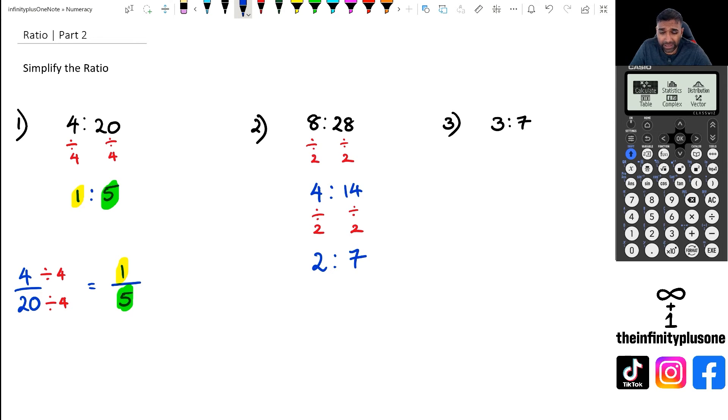Now you might be wondering, hang on, can I just go 8 divided by 4 straight away and 28 divided by 4 straight away? Of course you can. However there's nothing wrong in doing the long method as well. But I think if you're comfortable with simplifying fractions then you're most likely comfortable with simplifying ratios.